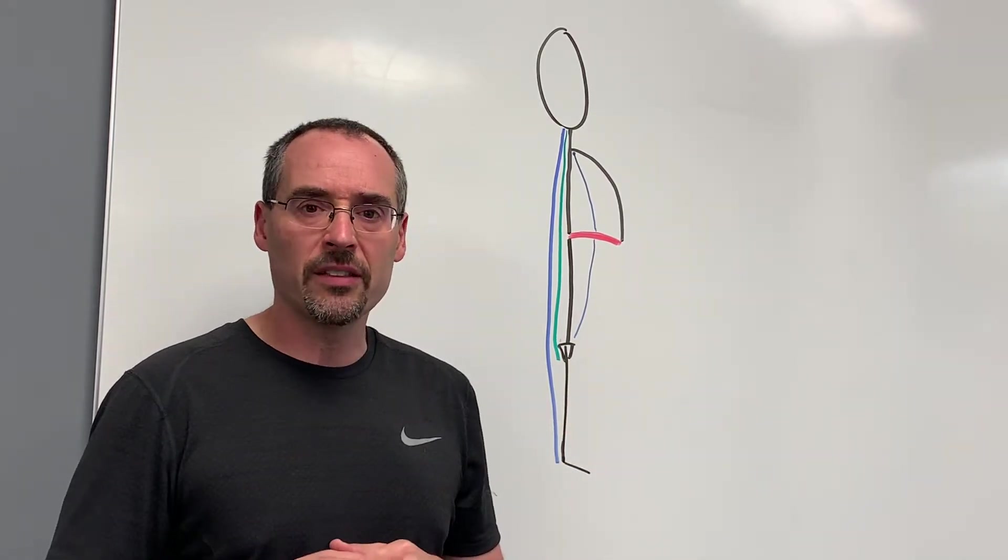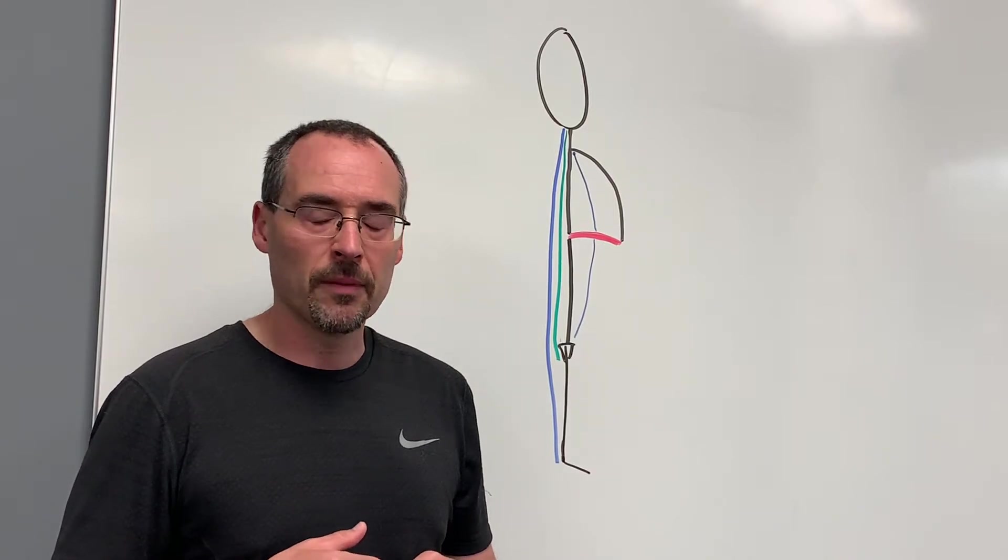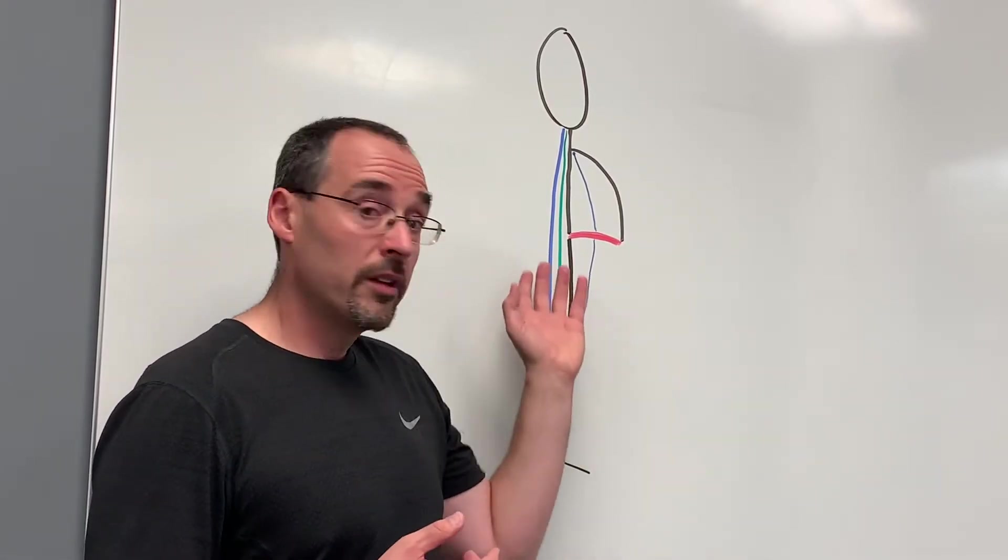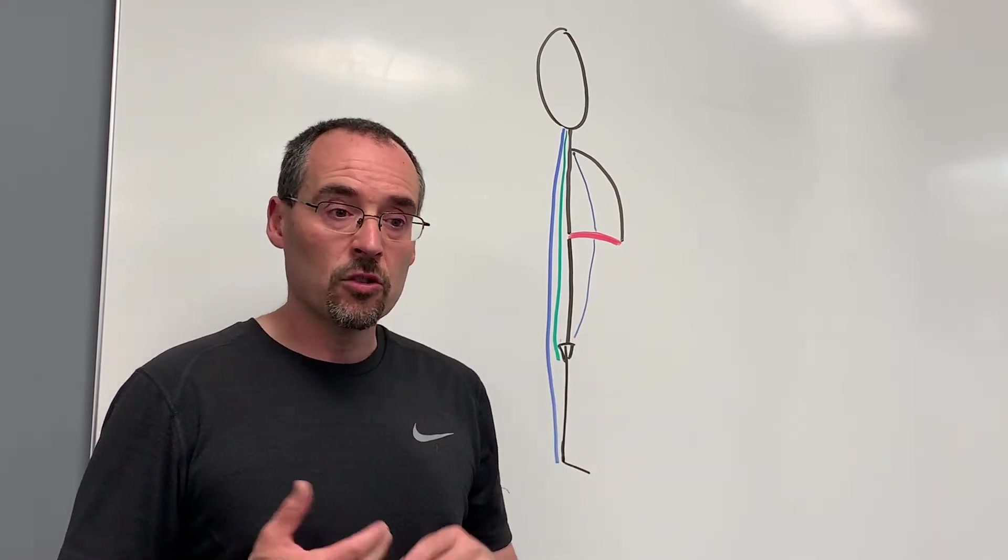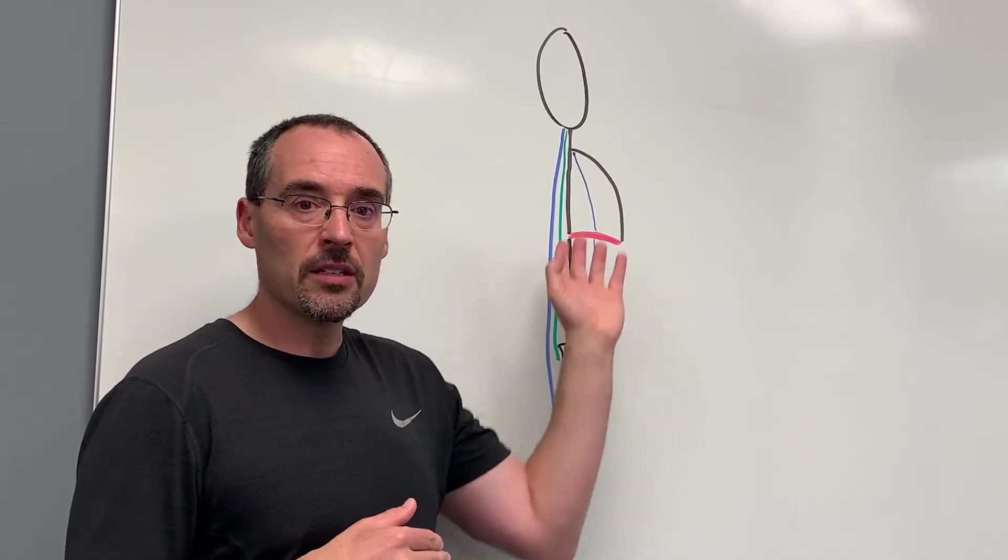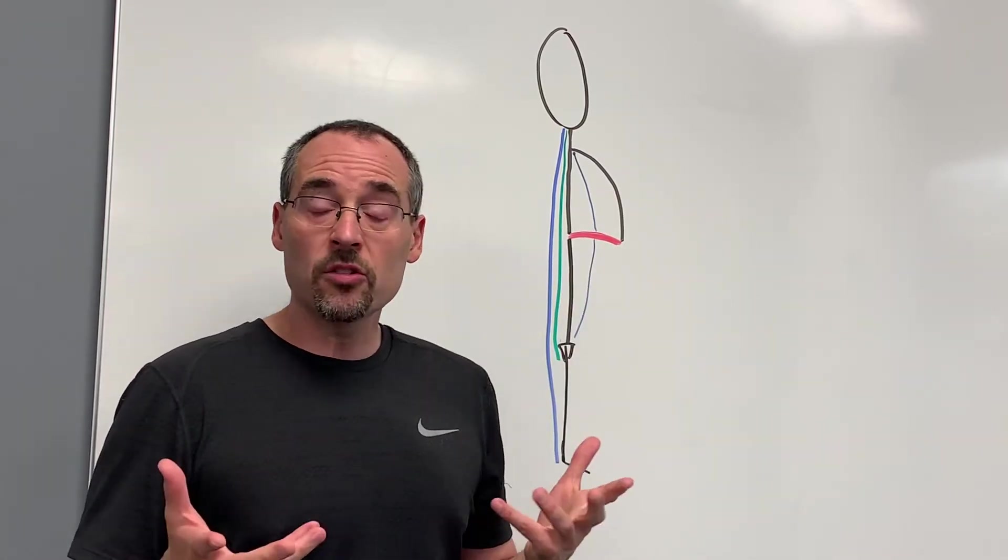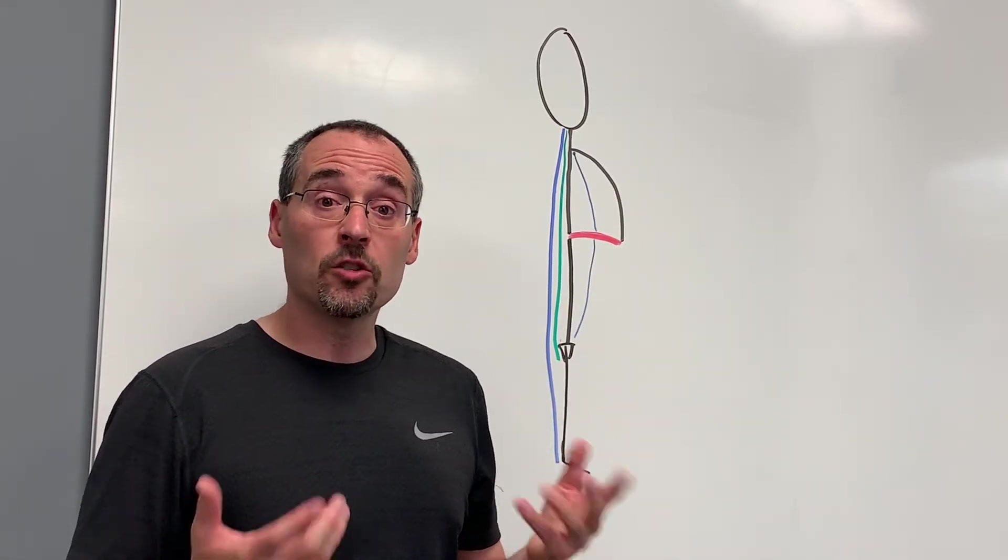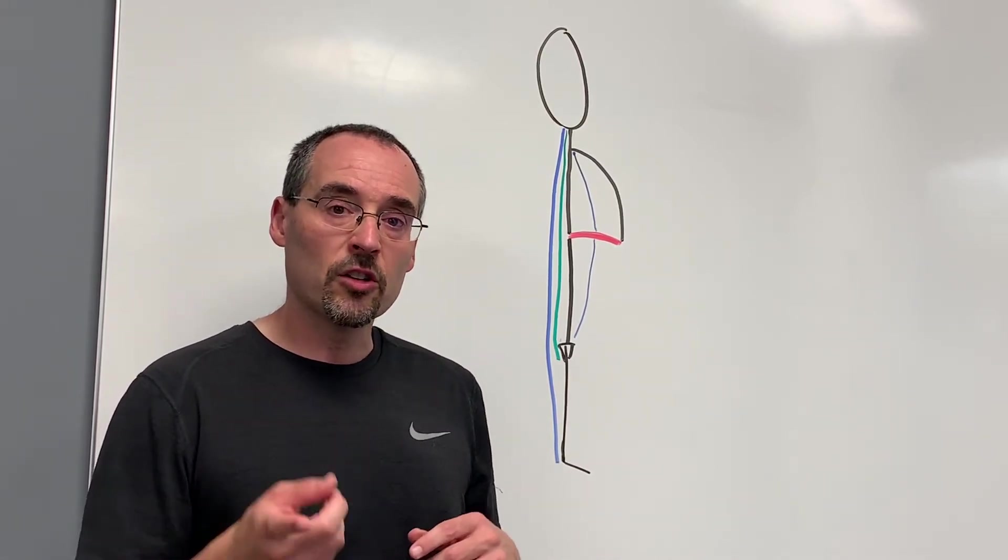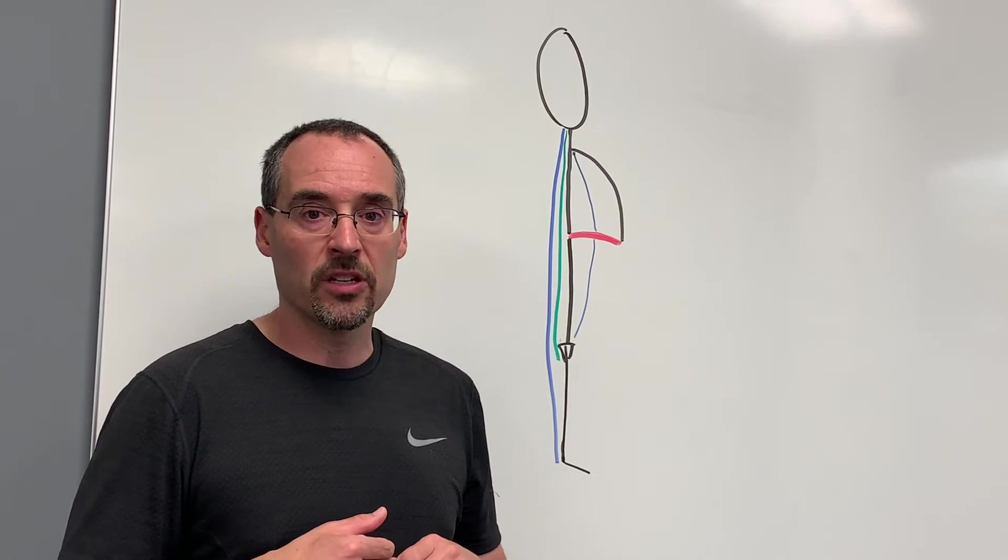So how do we identify these dysfunctional kinetic chain patterns? Unfortunately, modern medicine has all but ignored the importance of these fascial chains. So MRIs, CAT scans, x-rays, ultrasounds, they don't really appreciate the kinetic chain movements. But that's okay. We can do some simple fundamental movements, and any difficulty doing those fundamental movements is a clue that there's a problem in the kinetic chain system.